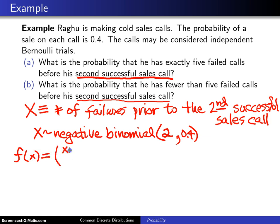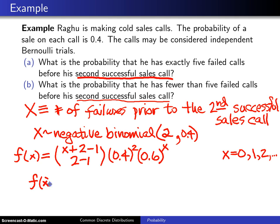That will be (x + 2 - 1) choose (2 - 1) times 0.4 raised to the second power times 0.6 raised to the x power, and that's good for x equals 0, 1, 2, etc. If you simplify that, notice 2 minus 1 is 1, so here we simply have (x + 1) choose 1, which is just x + 1, and 0.4 squared is 0.16. So f(x) = (x+1)(0.16)(0.6)^x for x = 0, 1, 2, etc.